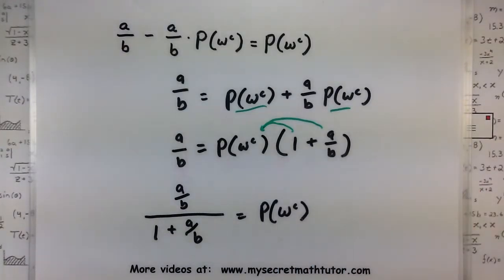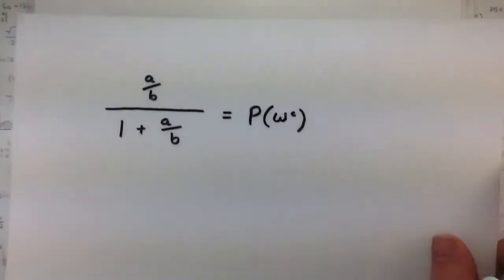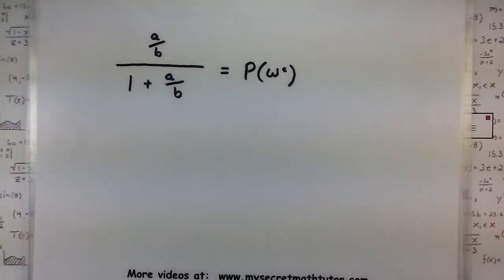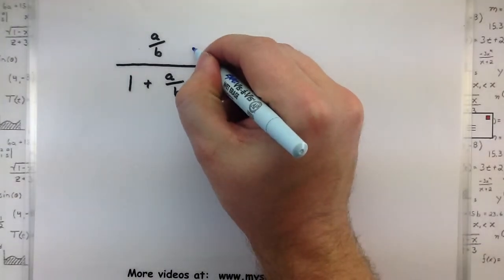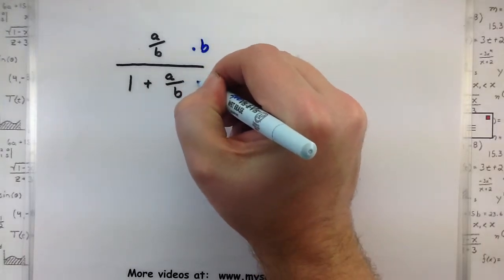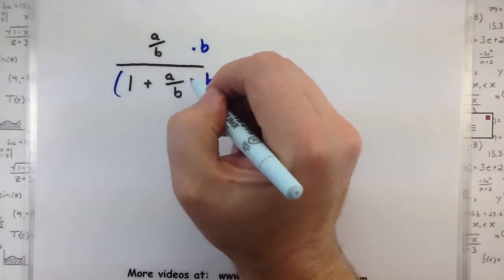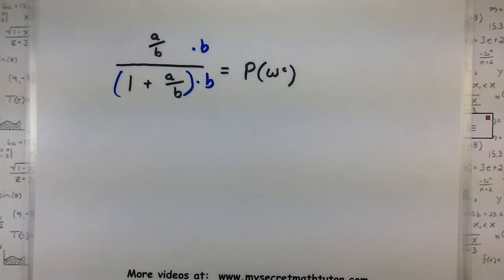Now that we have this little single term here, we can divide both sides by one plus A/B. So we have A/B all divided by one plus A/B equals our probability of not winning. So we're almost done. It almost looks like the formula. Just one little last step to do.